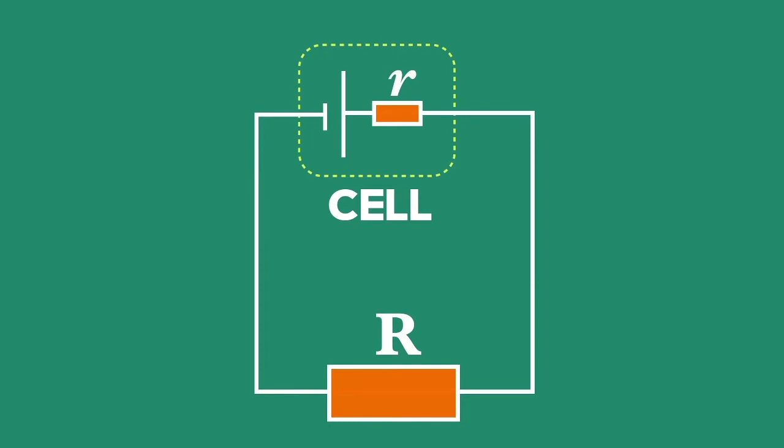We can treat the internal resistance of batteries just like any other series resistor. It sometimes helps to draw another resistor in the circuit next to the cell. The external resistance is still given the symbol capital R, while the resistance of the cells is given the lowercase symbol r.